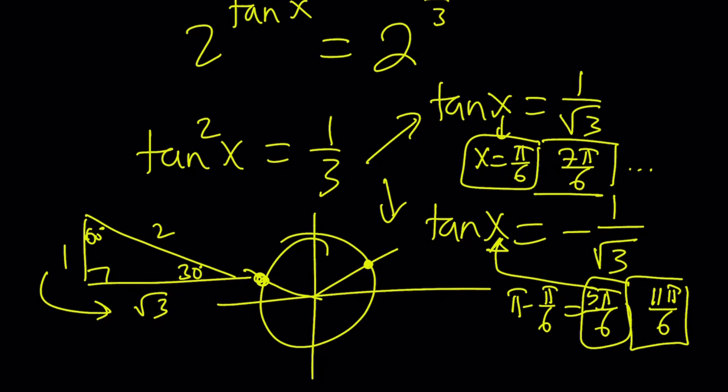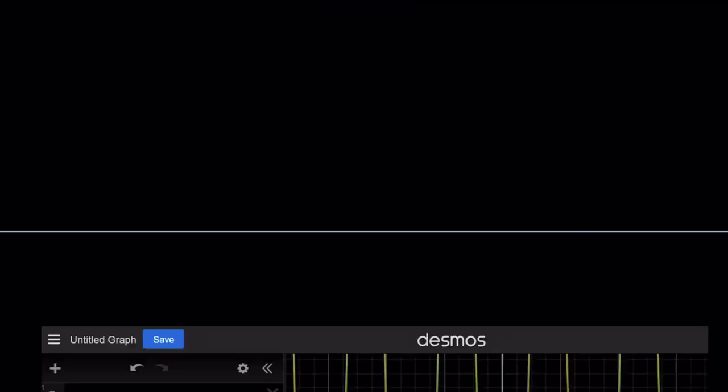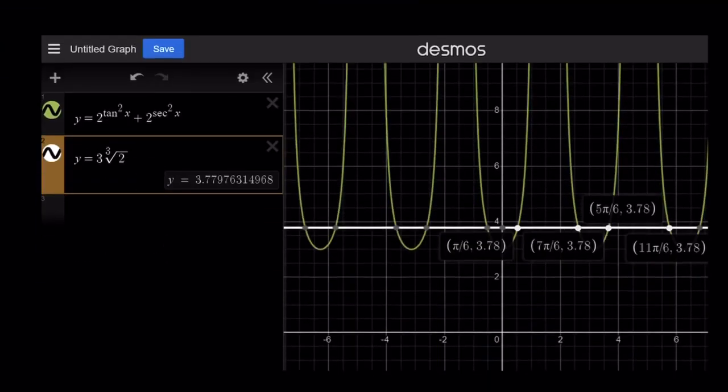Let's go ahead and take a look at the graph and we'll finish up with that. So I graphed this function for you, two to the power of tangent squared x plus two to the power of secant squared x, which is kind of like a parabola, but it's not a parabola. And the intersection with the horizontal line y equals three times the cube root of two, which obviously gives you all the solutions. So these are all going to be the intersection points, positive and negative are going to give you the solutions.